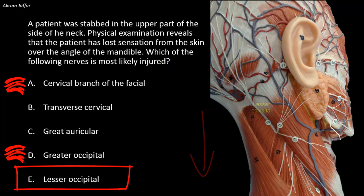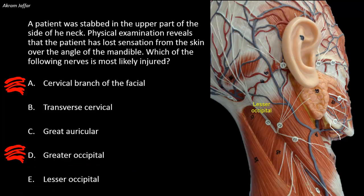The lesser occipital, option E, is derived from C2 and runs up along the posterior border of the sternocleidomastoid to supply the skin over its upper part, behind the auricle. The great occipital nerve supplies the skin on the posterior aspect of the scalp and is derived from the posterior primary rami of C2, while the lesser occipital is derived from the anterior primary rami of C2 and is a branch of the cervical plexus. So the lesser occipital is a wrong choice.